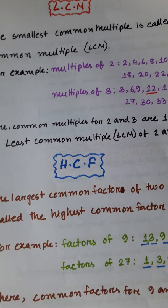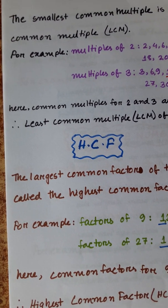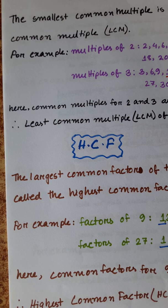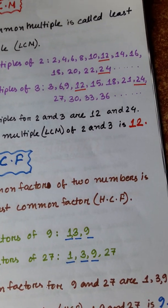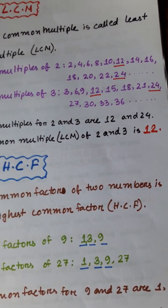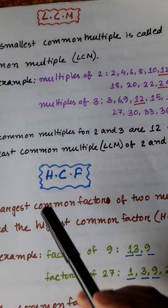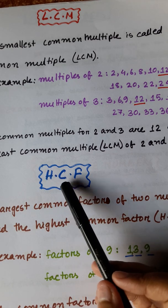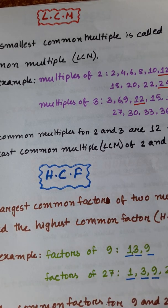The largest common factor of two numbers is called the Highest Common Factor, abbreviated as HCF.